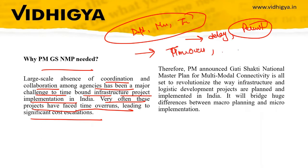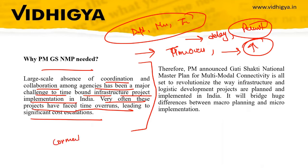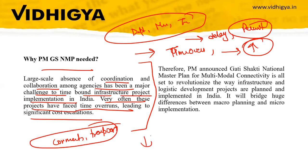Time overruns lead to increased cost of projects, which becomes a challenging issue because it affects connectivity and transport. Because of increased time overruns and increased costs, investment also decreases — no country wants to invest where connectivity is not good. Therefore, the Prime Minister announced PM Gati Shakti National Master Plan for multi-modal connectivity.